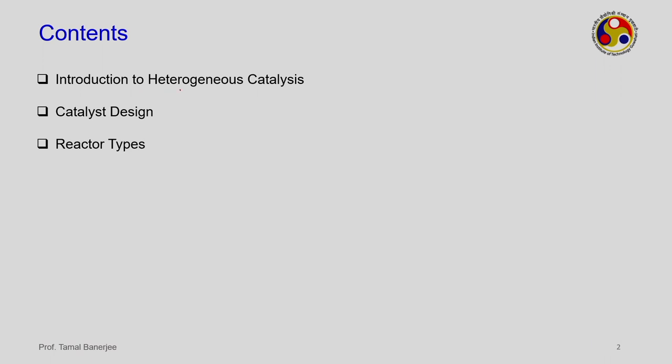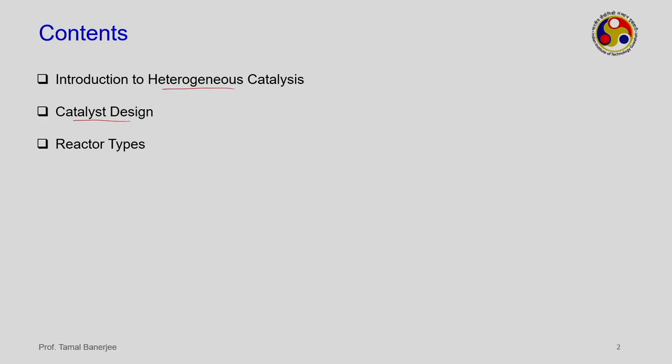In this module we will introduce heterogeneous catalysis, discuss the difference from homogeneous catalysis, and where each is used. Catalyst design is a major aspect involving both chemical engineering and chemistry, since it depends on shape, size, porosity, and structure — whether hollow or solid — as these govern output variables such as temperature and pressure drop. We will then discuss reactor types comprehensively.